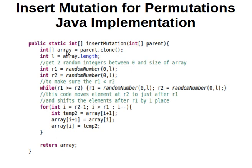We can of course work immediately on this array and then we don't have to return a value — this can be void and the change will automatically happen on the input array anyway. So we make a copy of that array, we get its length — how many elements it has — and then we get two random integers between zero and the size of the array.